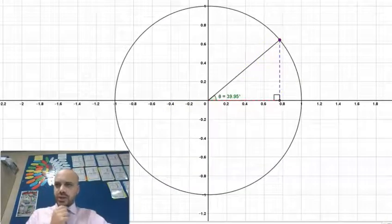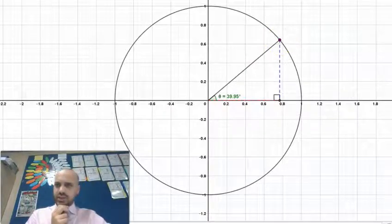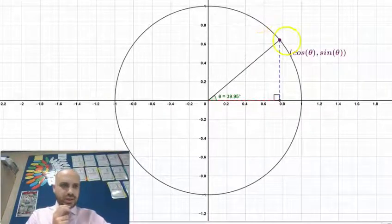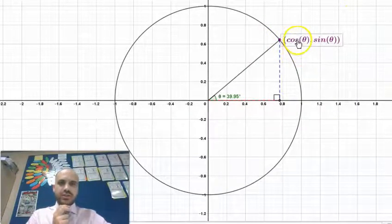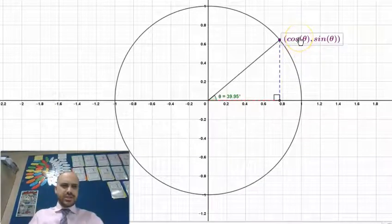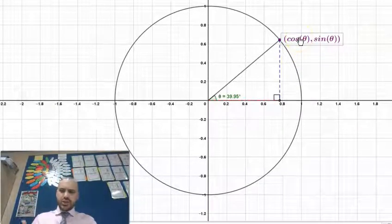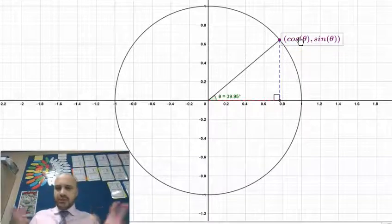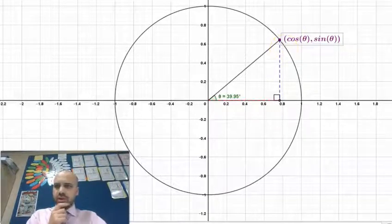Now, you already know that this coordinate here is cos theta, sine theta. So you need to ask yourself, what about the tan ratio? I've got a cosine ratio, a sine ratio. Where does the tan ratio fit into all of this?